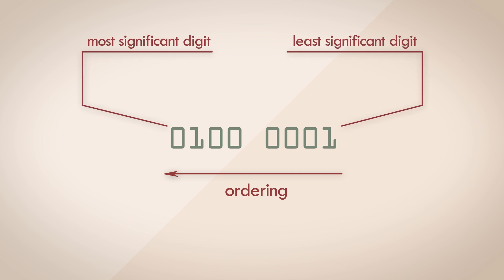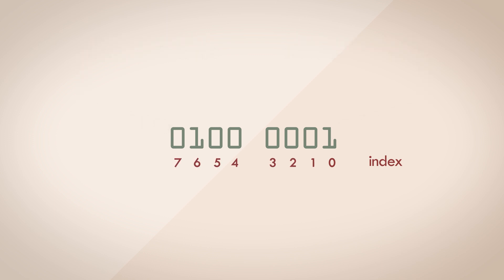The binary system is just another number system. The digits are ordered from right to left, left being the most significant digit, and the right being the least significant digit. And each digit has an index, starting from an index of 0 on the right, to 1,2,3,4,5,6,7 on the left. And the value of each digit on its own is just the base of the number system to the power of the index. Here it's just 2 to the power of the index.